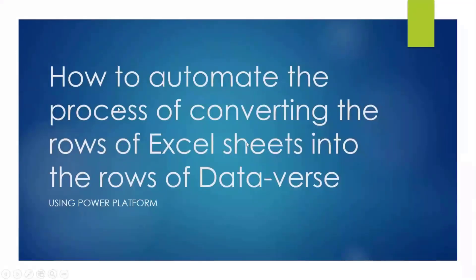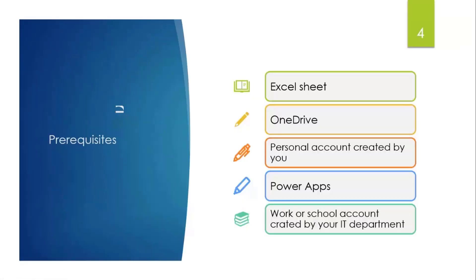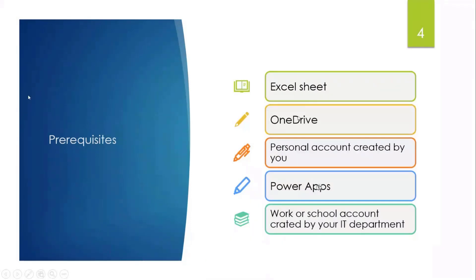My topic today is how to automate the process of converting the rows of Excel sheets into the rows of data records using Power Platform. The prerequisites for this automation are an Excel sheet and OneDrive — both through a personal account — and then Power Apps, which we have through the account provided by our IT department.